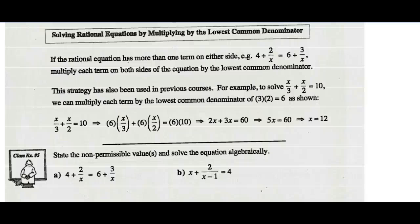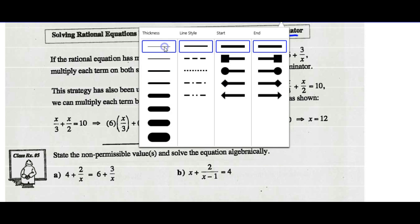Math 30-2. Today we're going to do Part B of solving rational equations. This part, we're going to look at solving them by multiplying through by the lowest common denominator.